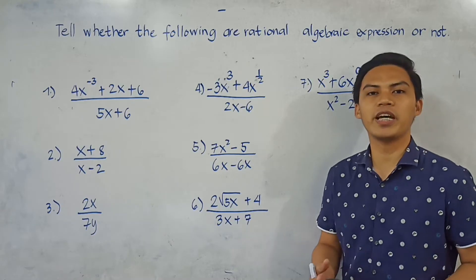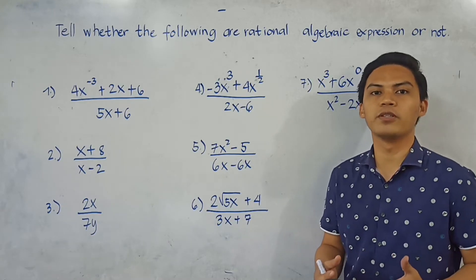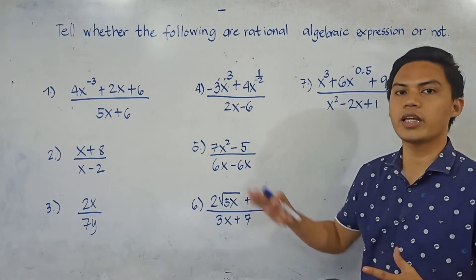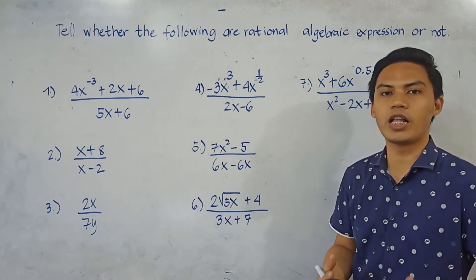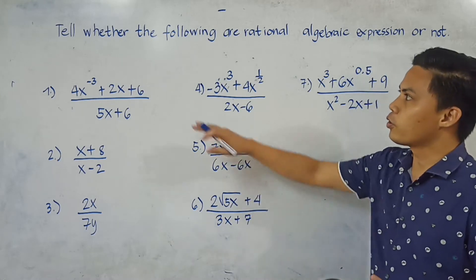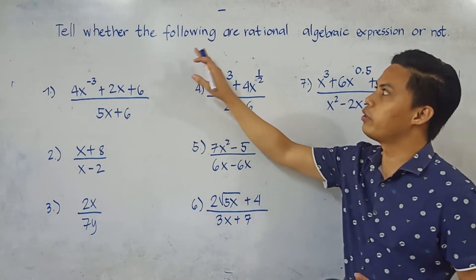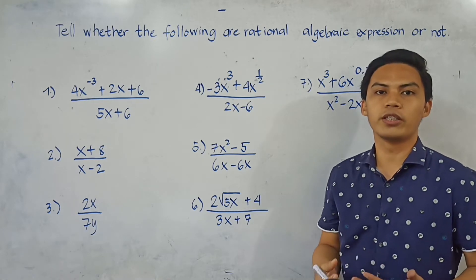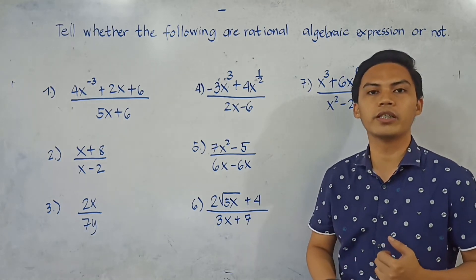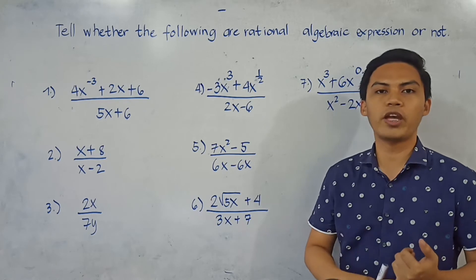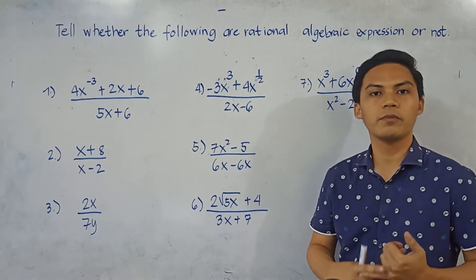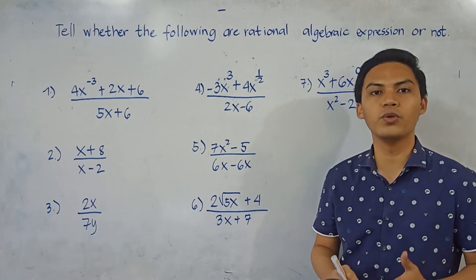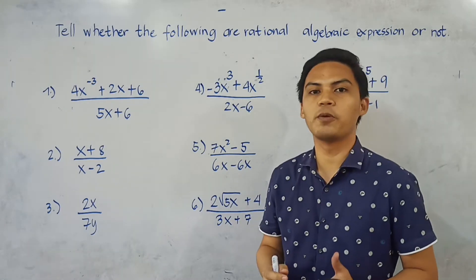To understand better, let's look at some examples. These are algebraic expressions and we will determine which ones are rational algebraic expressions. The instruction is: tell whether the following are rational algebraic expressions or not. Based on the definition, the numerator and denominator must be polynomials, and the denominator must not be equal to 0. Let's look at number 1.